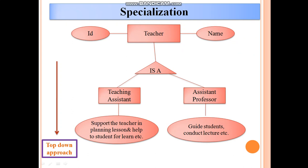So what exactly does the teaching assistant do? The teaching assistant supports the teacher in planning lessons and helps students, among many other works. The assistant professor guides students, conducts lectures, etc. This is nothing but specialization — a top-down approach, exactly opposite to generalization.